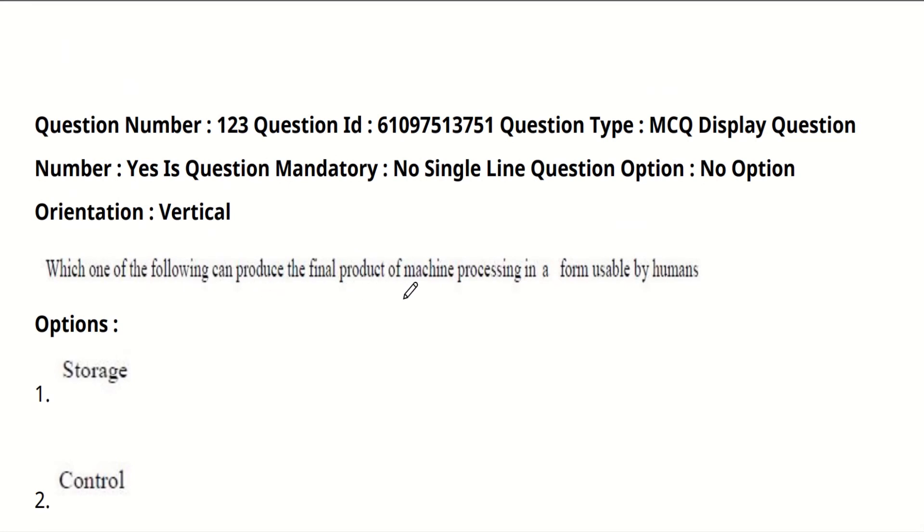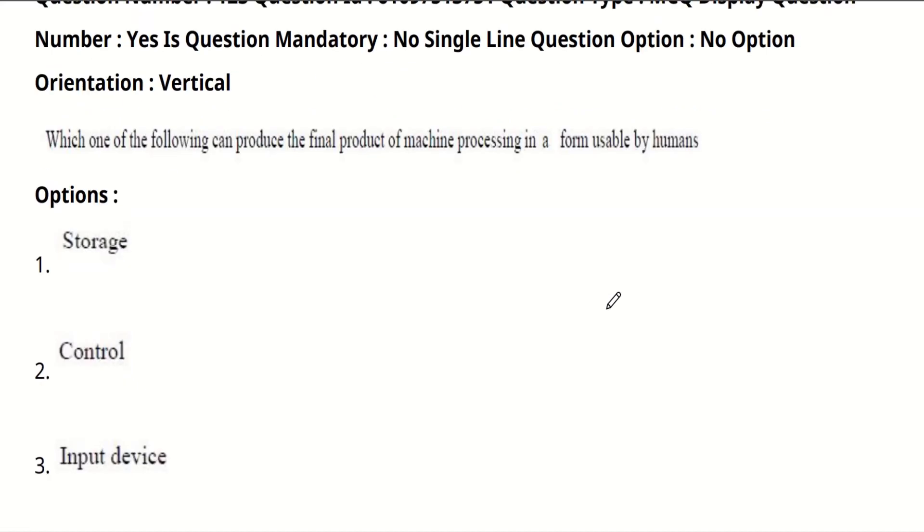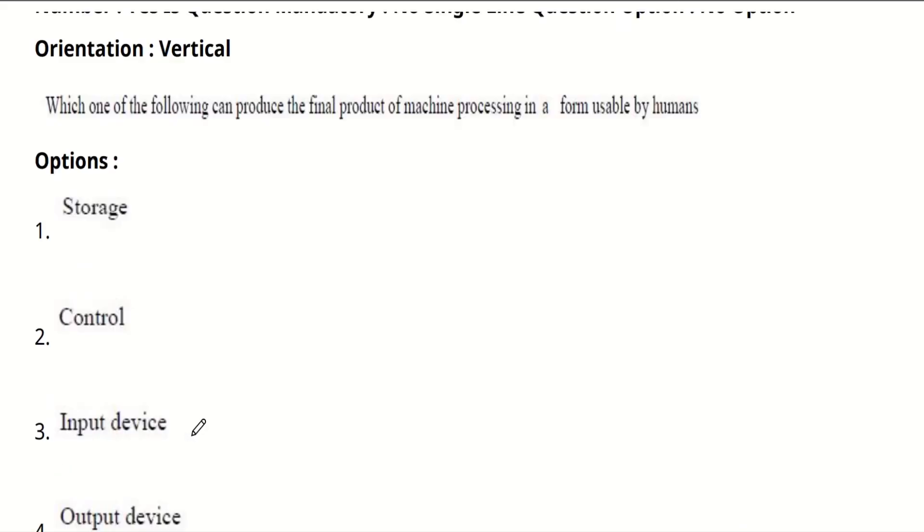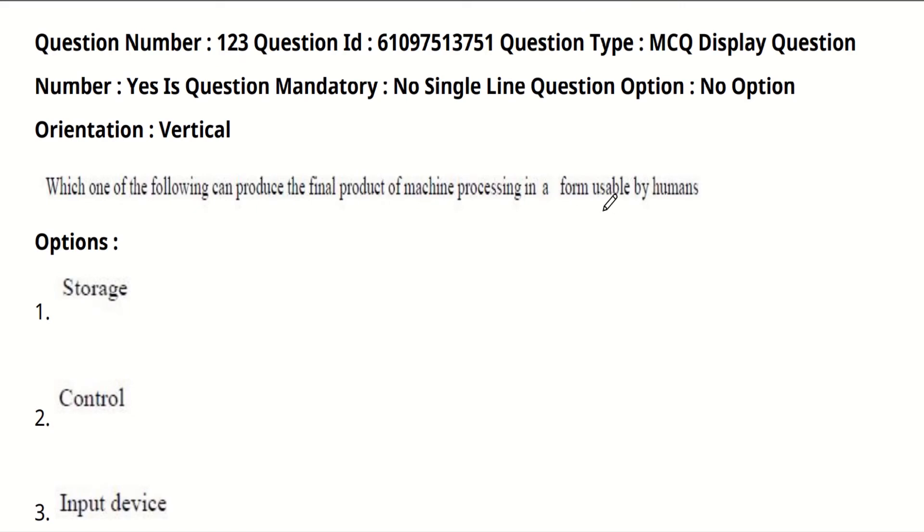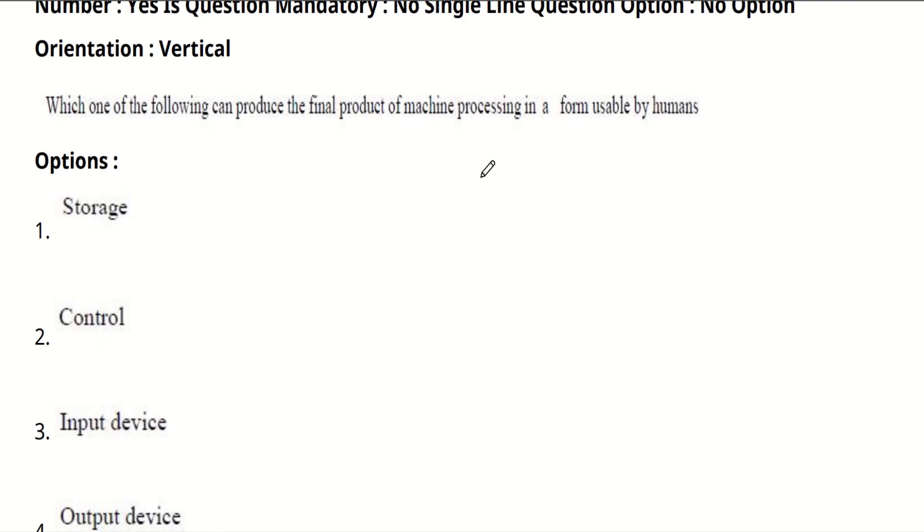Which one of the following can produce the final product of machine processing in a form usable by humans? First we will see the options: Storage, Control, Input device, or Output device. The question is asked like which are used by final product after the computer has processed something and the final product is used by humans. We will be getting the output. We are interacting with the output, so we use output devices for interacting with the output, like monitors, printers, etc. So the answer is output device.